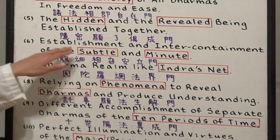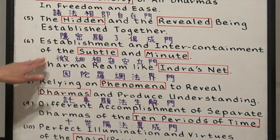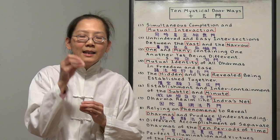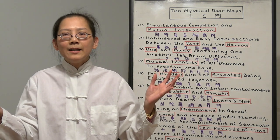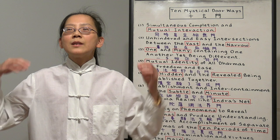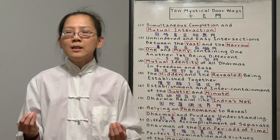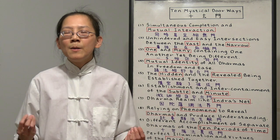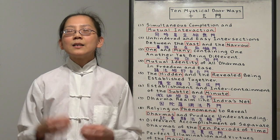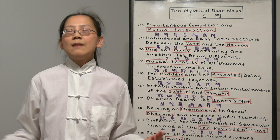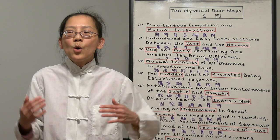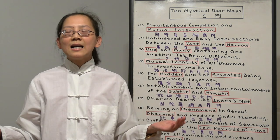Number six, establishment and intercontainment of the subtle and minute. A big container can fit many little things. Little things can fit in a big container. Why is that? Because big and small is just relative. In the world of the noumenon, there is no obstruction or hindrance between big and small. You're saying, that's impossible. How can big things be contained in a little thing? That's the world of the Buddha. All the Buddha and Bodhisattva, they have supernatural powers. It's actually within all of us. If we just go back to our original enlightened mind, we all have these kind of abilities.